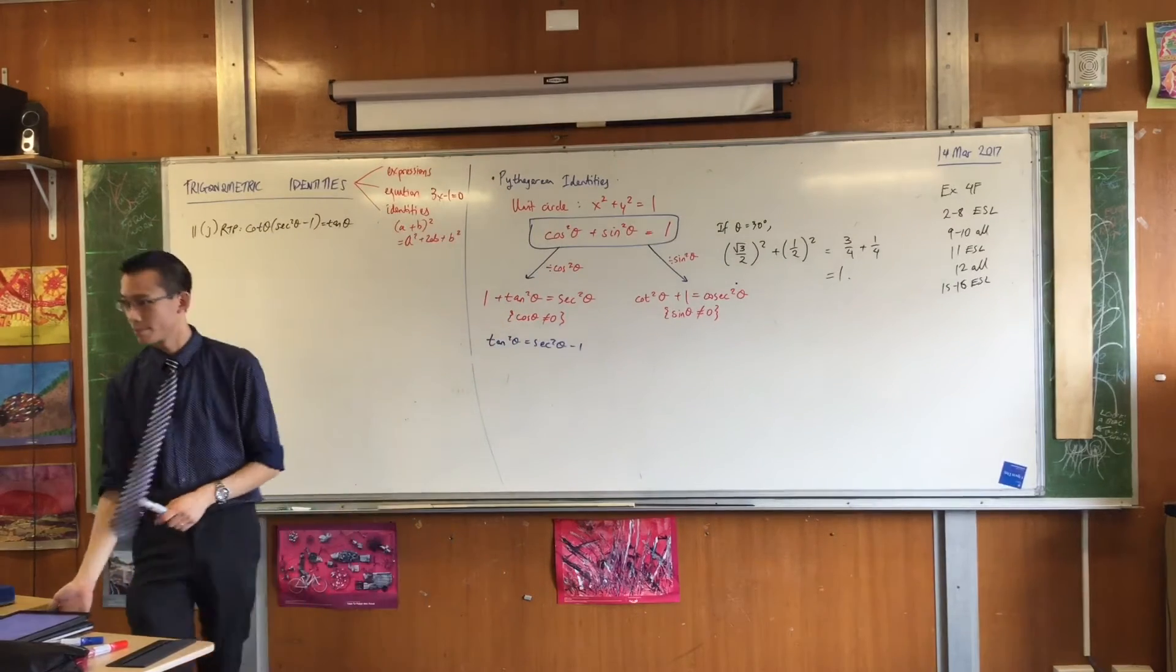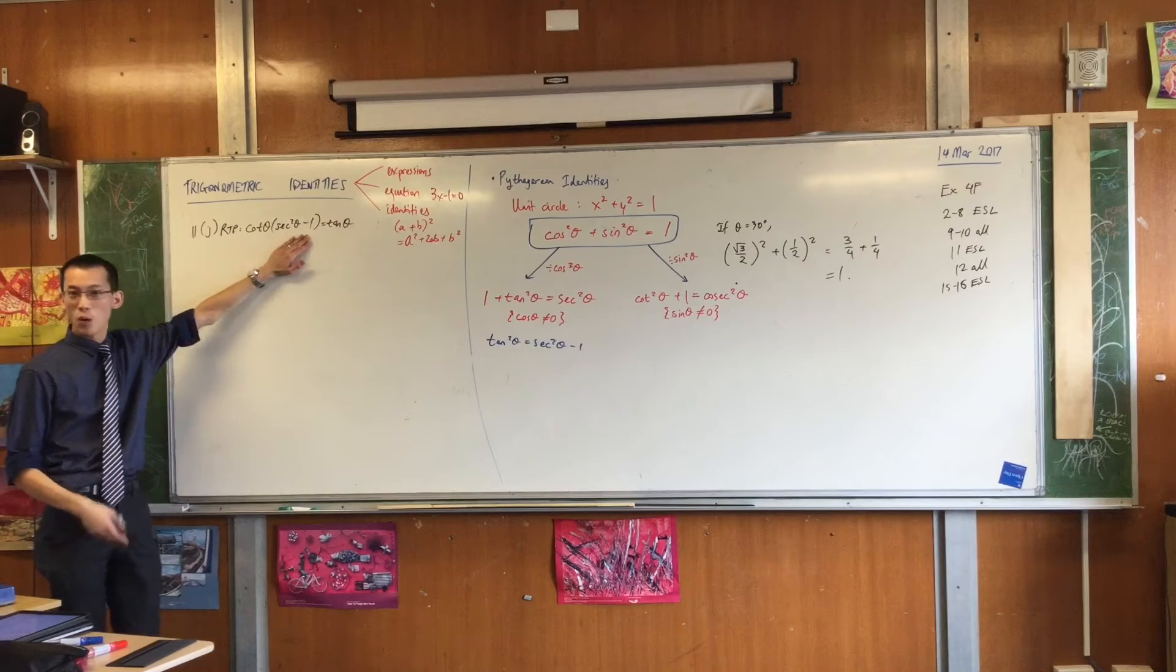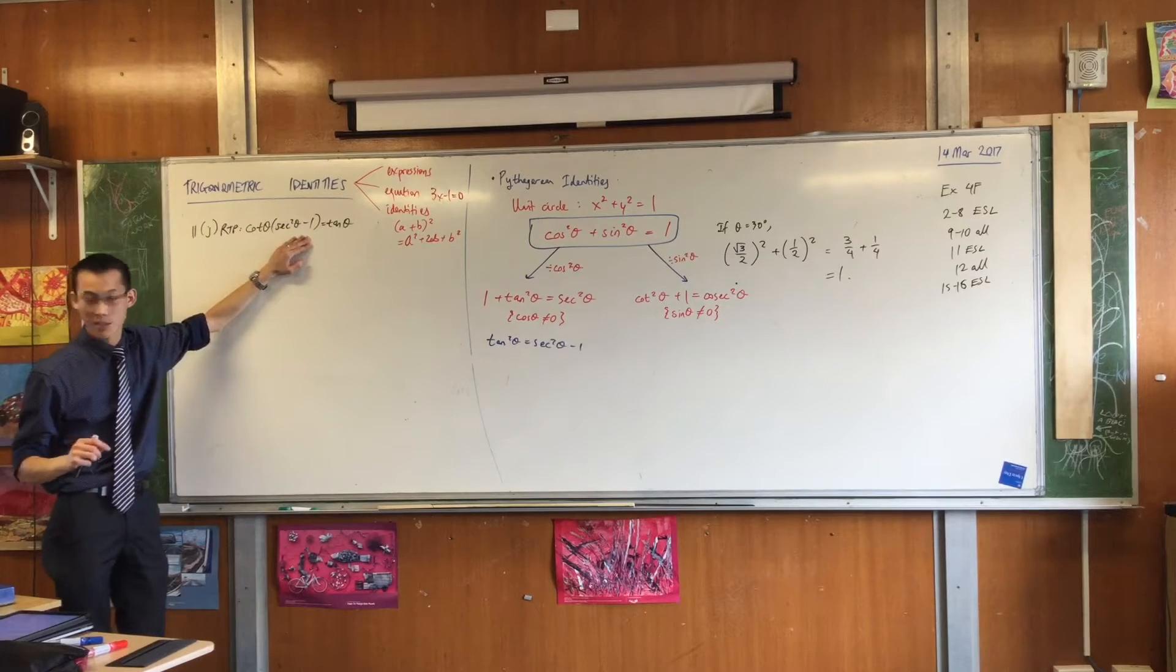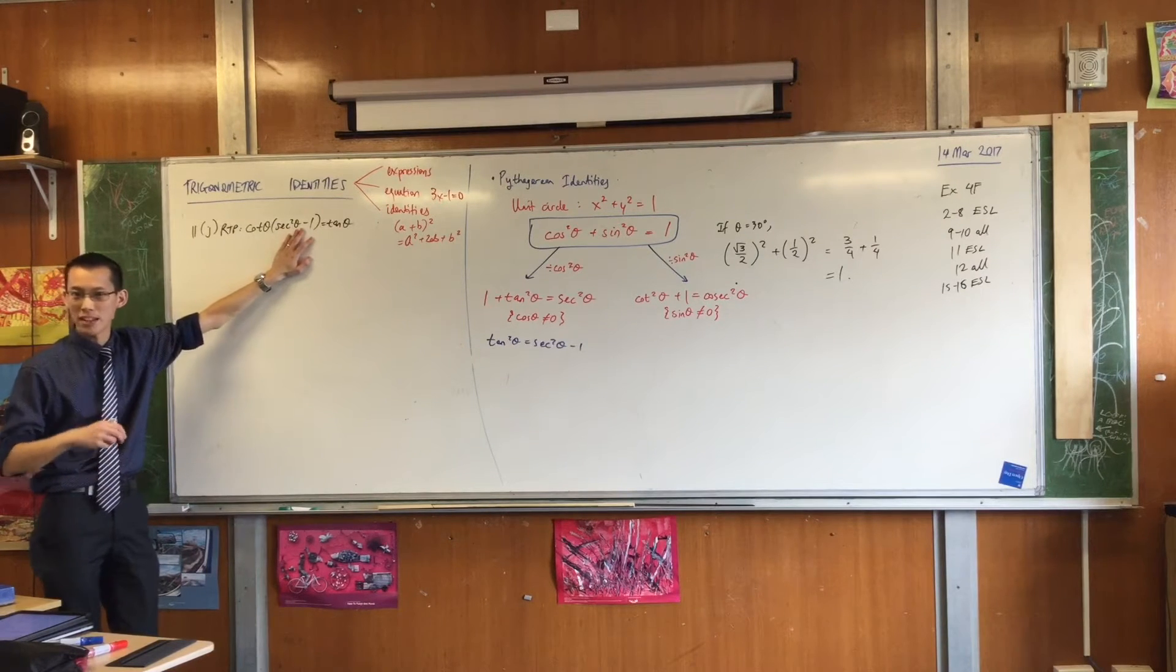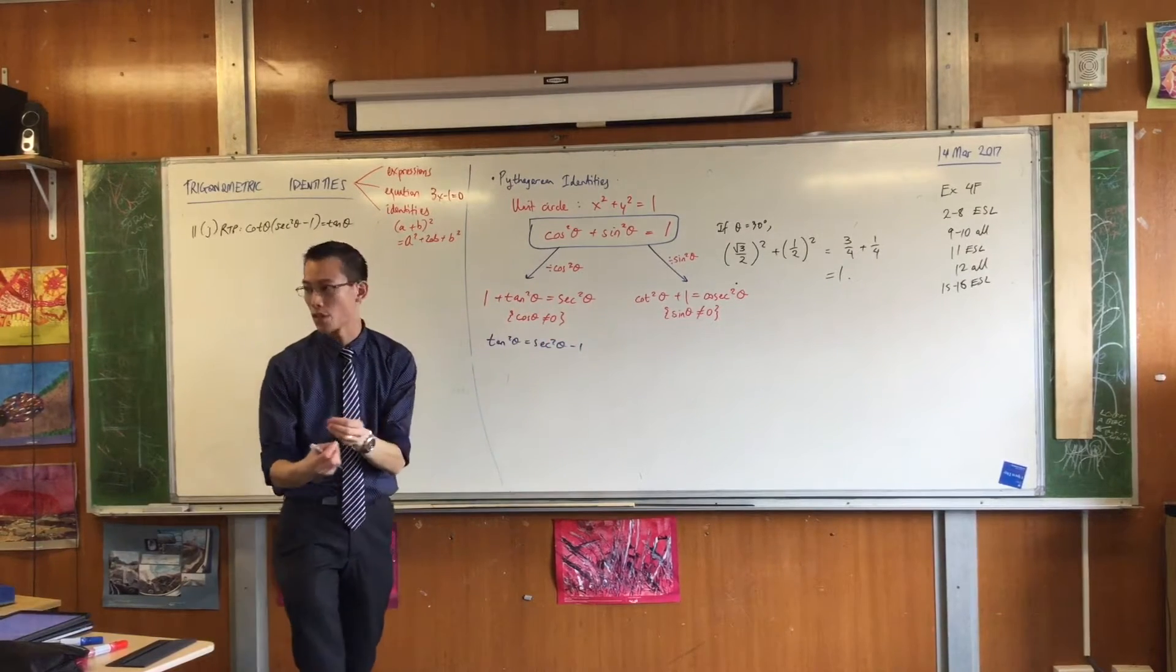You have an identity. So sec squared theta minus one is just tan squared theta. Okay, so immediately you can see, oh look, I recognize some stuff. In fact, a lot of this will come down to, at the beginning, knowing these things and starting to muck about with them and use them, okay?